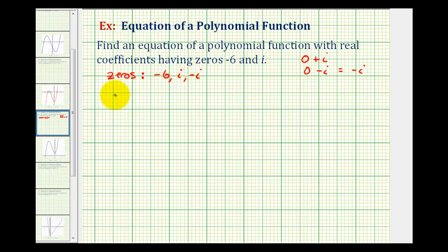So from here we know the factors of our function. Our function must contain a factor of x minus negative six which we'll simplify in the next step, a factor of x minus positive i and also a factor of x minus negative i.